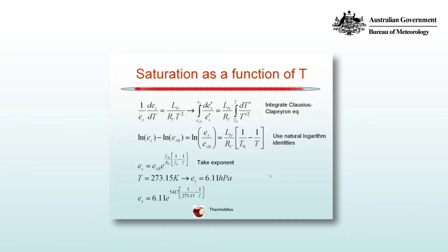We can calculate, or measure in the laboratory, at a temperature of 273.15 Kelvin or 0 degrees Celsius, the vapour pressure is 6.11 hPa. So the final form of our equation for the saturated vapour pressure is 6.11e to the power of 5417 times (1/273.15 minus 1/T).